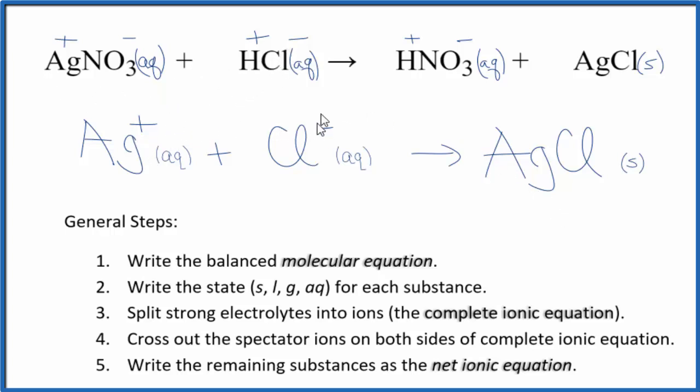We have a positive and a negative. They balance out. We have a neutral product here. We also have one silver atom, and then one silver atom here, one chlorine atom, and one chlorine atom. So that's balanced as well.